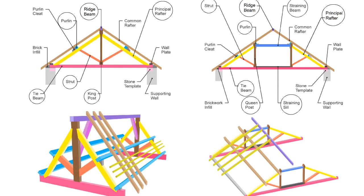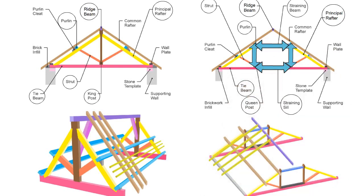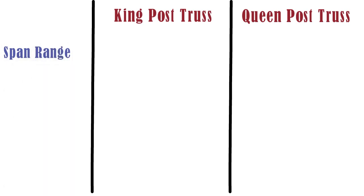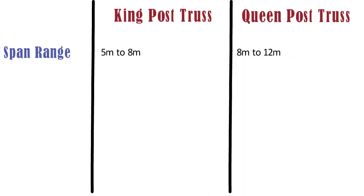Here we can see that two queen posts, straining beam, and straining sill are additional components in the queen post truss; otherwise the rest of the components are the same as king post truss. King post truss is used when the length of span is in the range of 5 to 8 meters, while queen post truss provides extra reliability for wider roof designs.